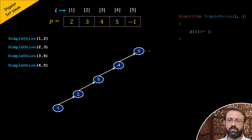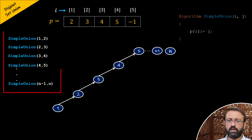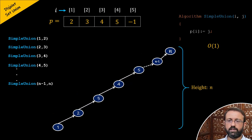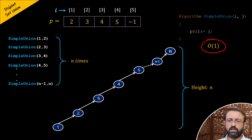Now, suppose we have n number of disjoint sets consisting of single elements and if we perform the sequence of union operations in this way, then we will have a tree that will have the height as n, and such trees are not feasible because of its height. Even though the simple union algorithm takes constant time, that is O(1), but since the sequence of union operations on n disjoint sets is performed n times, these sequence of union operations will be taking O(n) as the time complexity. So, simple union algorithm doesn't perform well in certain cases.